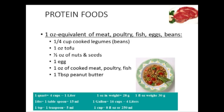For protein foods, one ounce equivalent includes: a quarter cup of cooked legumes; one ounce of tofu; half an ounce of nuts or seeds; one egg; one ounce of cooked meat, poultry, or fish; or one tablespoon of peanut butter. Note that one cup of legumes counted as a vegetable equals four ounce equivalents when counted as protein. If a patient had two tablespoons of peanut butter and one egg for breakfast, that equals three ounce equivalents of protein.